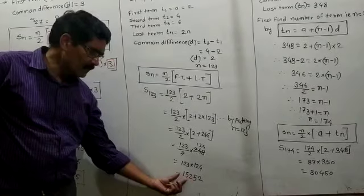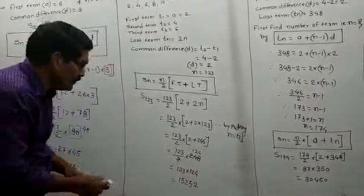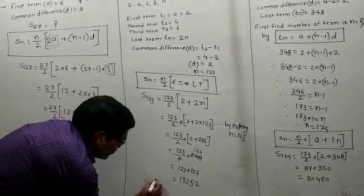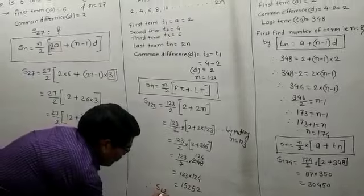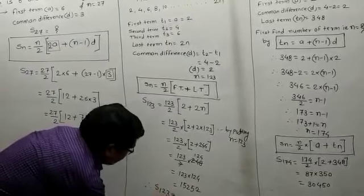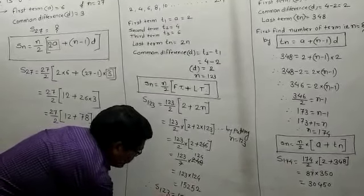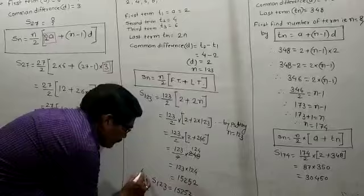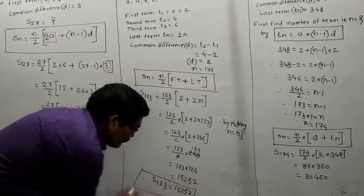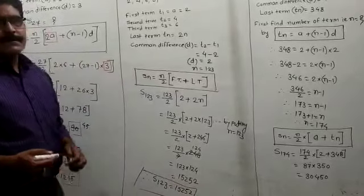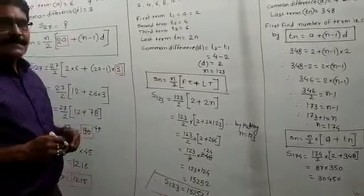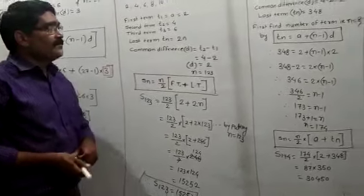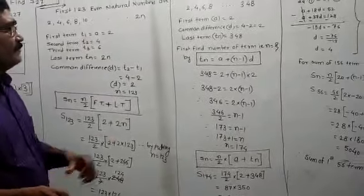The answer is 15252. Therefore, the sum of the first 123 even natural numbers is equal to 15252. Everybody understand? Then, you have to come to question number 3.